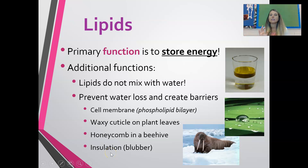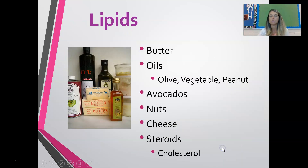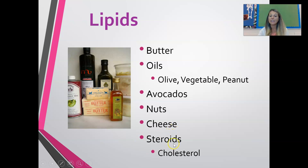Because lipids don't mix with water, they're also very good for insulating — the blubber of a walrus is full of lipids. Examples of foods with significant amounts of lipids include butter, olive oil, vegetable oil, peanut oil, avocados, nuts, and cheese. Steroids and cholesterol are also examples of lipids.